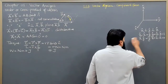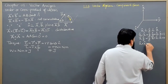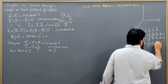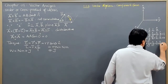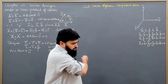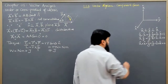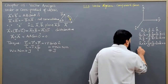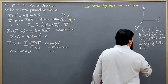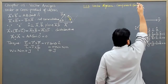For the cross product, x×x = y×y = z×z = 0, because sweeping a vector along itself sweeps no area. However, if we rotate one basis vector along another — like x along y — the result will equal the third axis.